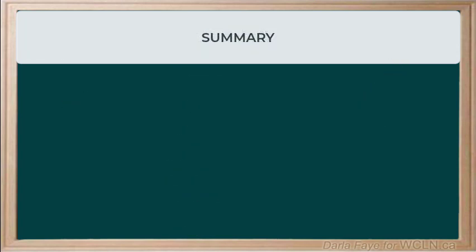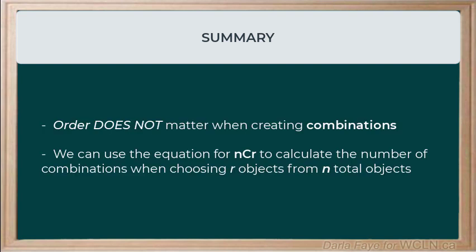Well, that brings us to the end of our introduction to combinations. So, in this video, we talked about the concept of a combination and that order does not matter when we're counting the possibilities. And secondly, we learned our new formula to calculate the number of combinations where we were choosing r objects from a total of n possible objects available.